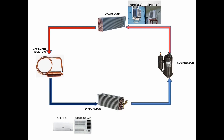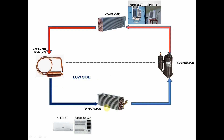So upon this cycle, we can determine it in two different sides. First is the low side and high side. So let's discuss the low side first. The low side is the side of our refrigeration cycle where the flow of our refrigerant is under low pressure and low temperature condition. Commonly, it starts at the exit of the capillary tube, going to the evaporator, then before entering the compressor. So that's our low side.